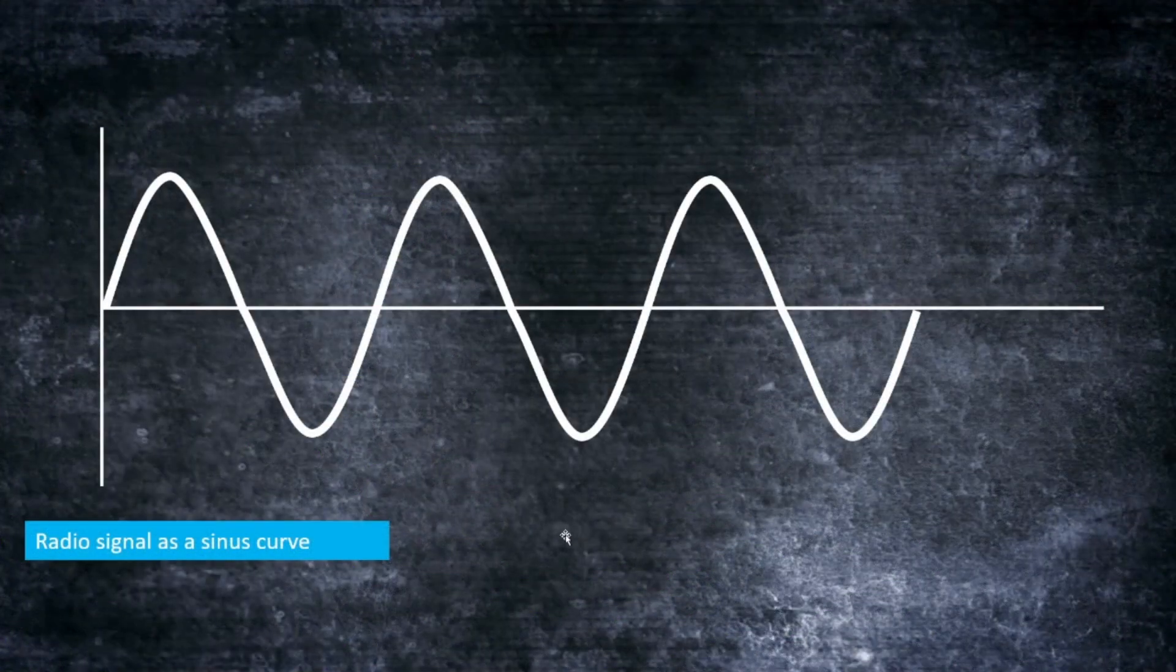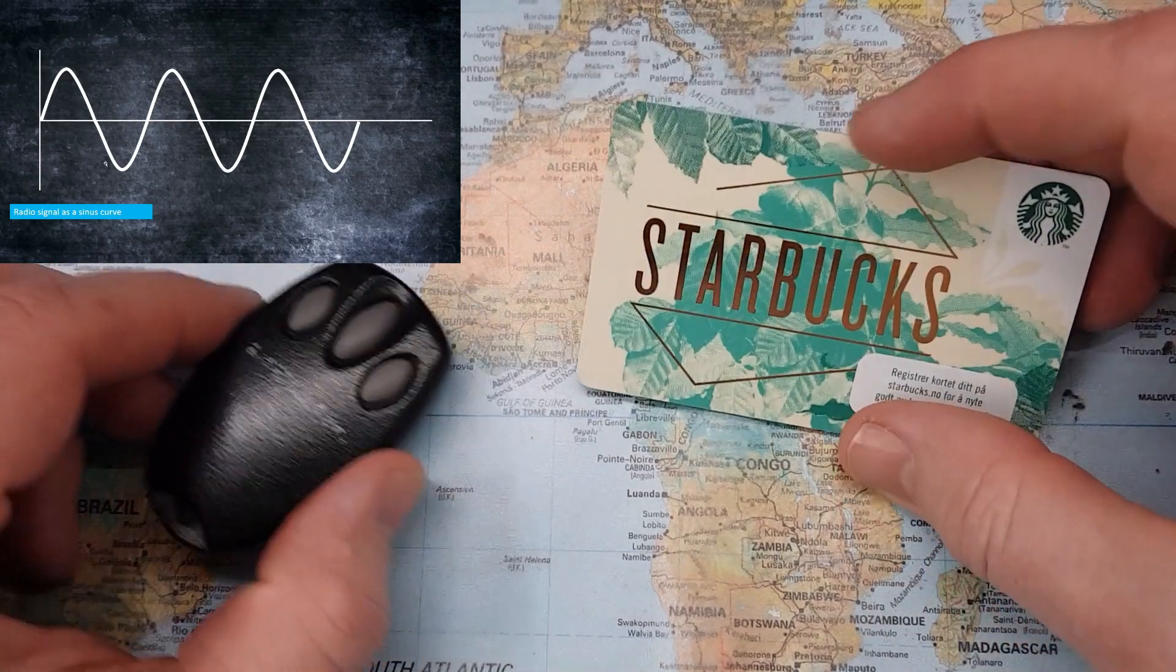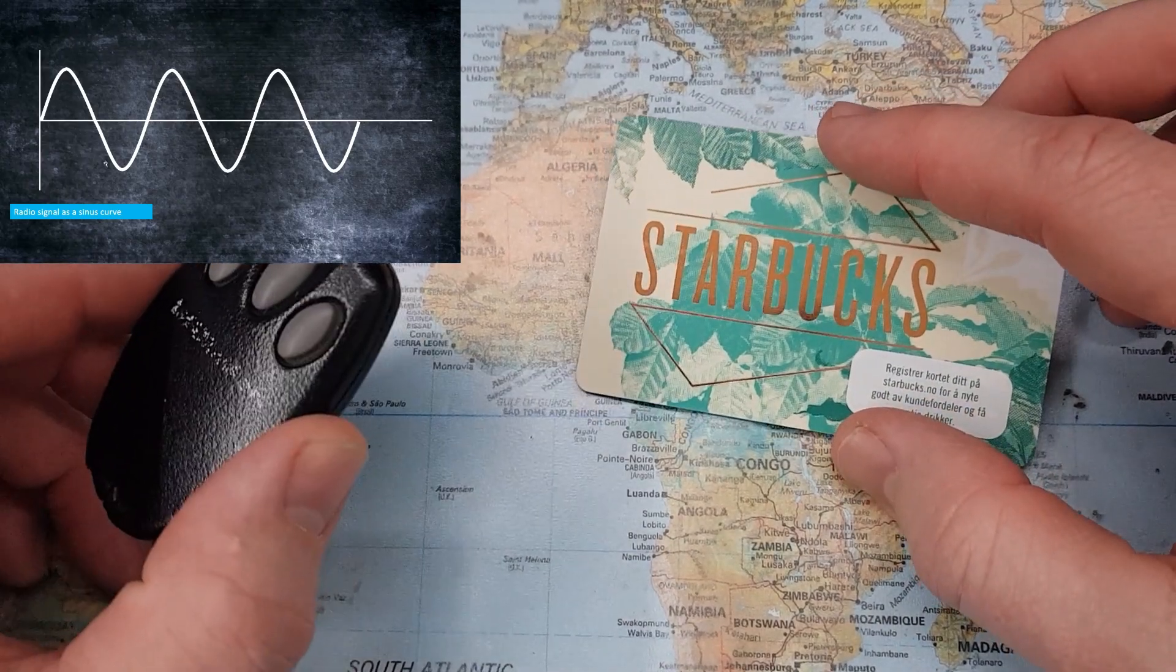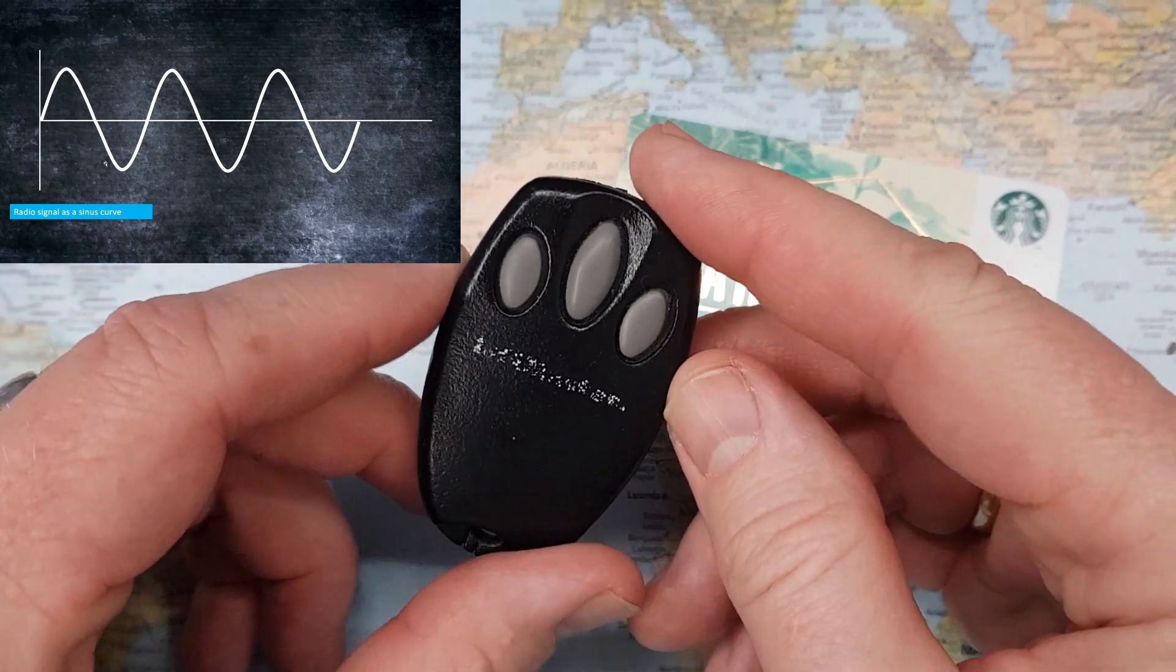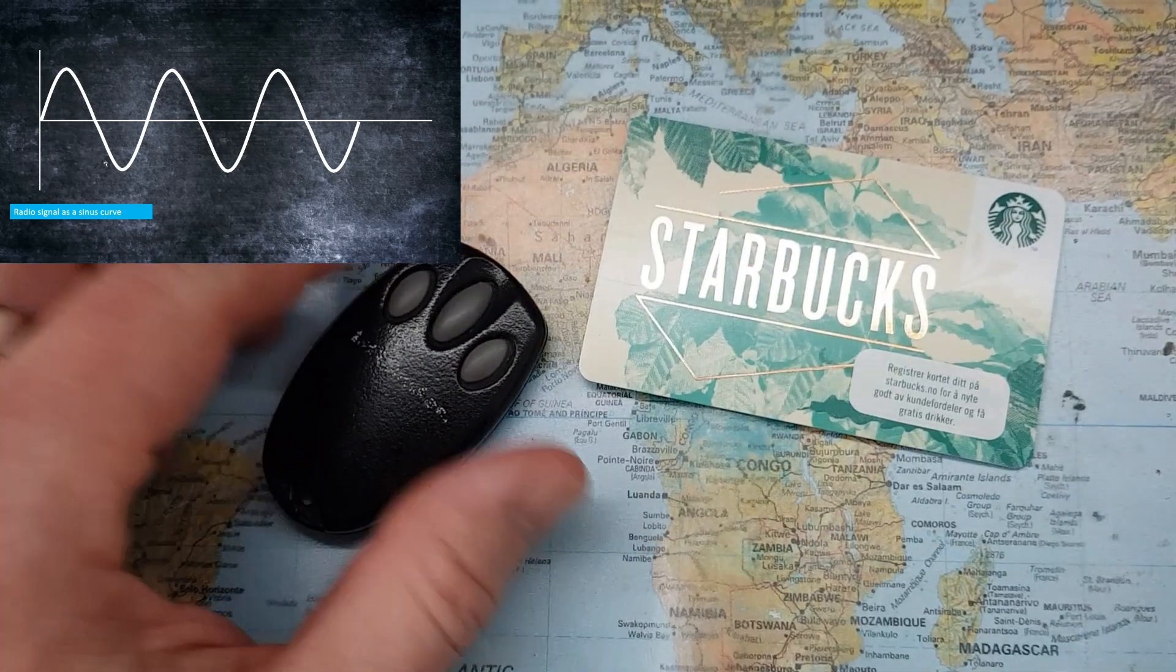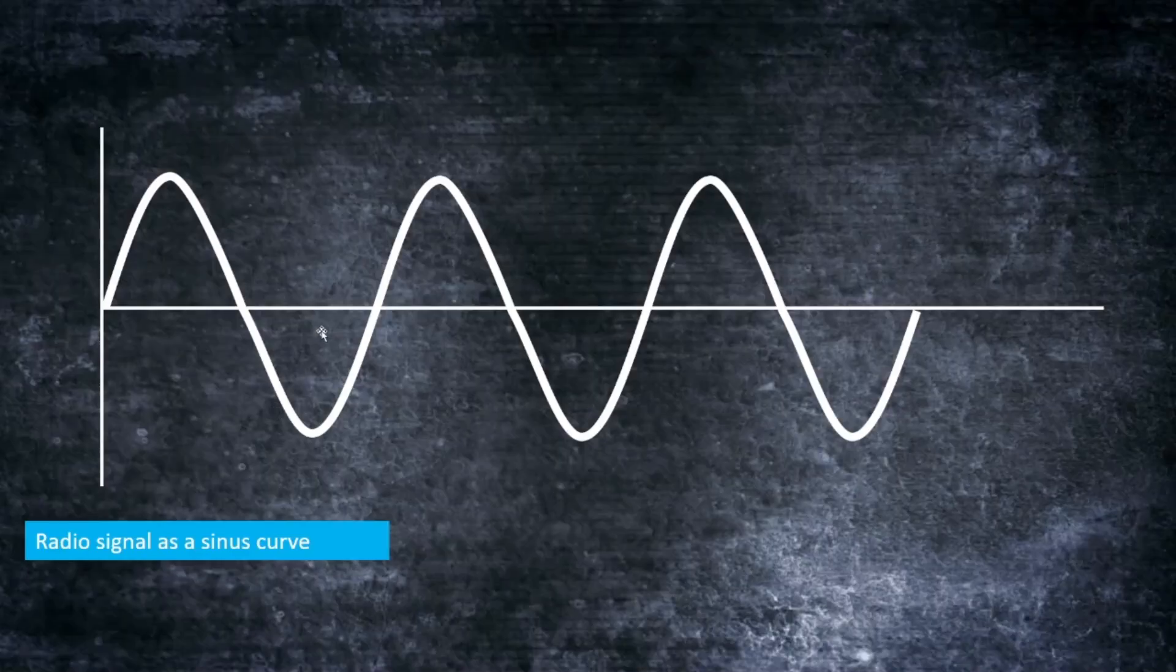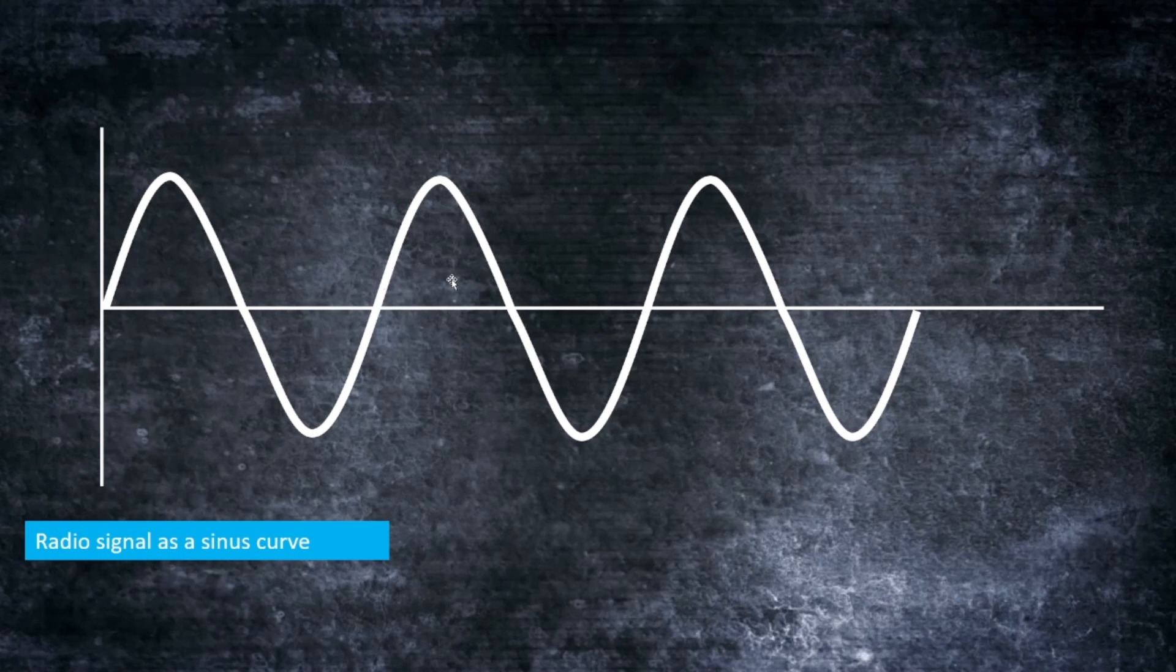So first of all, a radio signal is a radio wave that we can visualize as a sine curve. This is used between a card and a card reader, or a key fob to your car or door, or basically from any radio transmitter to a radio playing songs. As a constant signal, without changing anything, it doesn't contain any more information than just the wave itself.